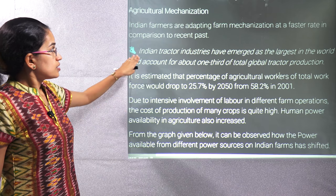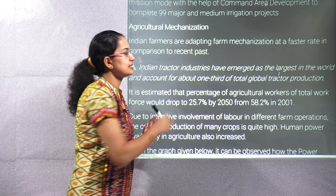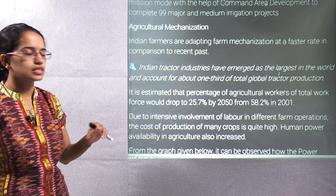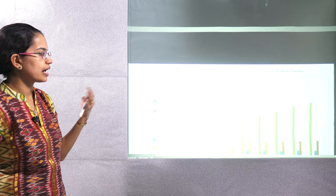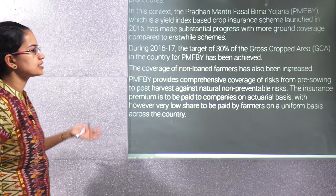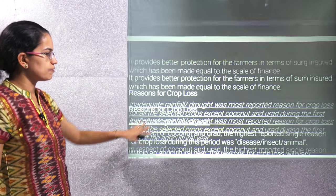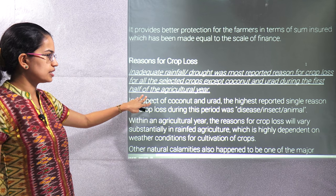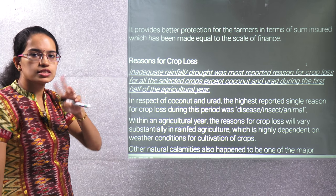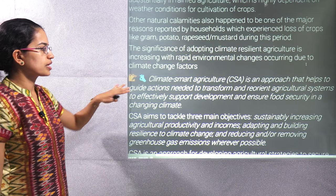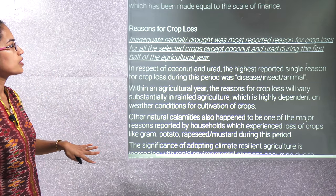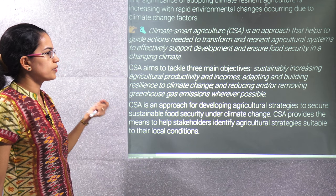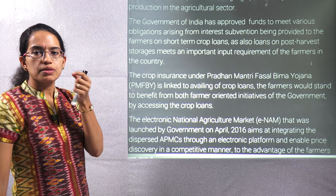India produces the largest number of tractors in the world — one third of total global tractor production is in India. India definitely has a huge agricultural base that should be efficiently utilized. Except for coconut and wood, over the first half of the agricultural year all crops have registered a loss, so we should work on more climate-smart agriculture. Climate-smart agriculture talks about transforming agricultural systems for good support and food security.